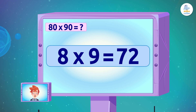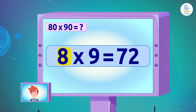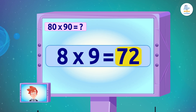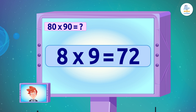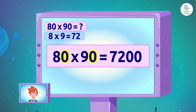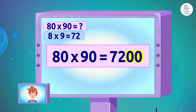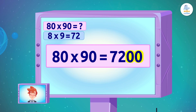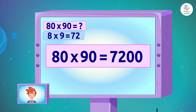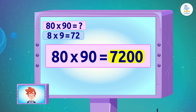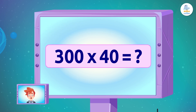Let's follow the trick we just learned. We will start by multiplying the non-zero numbers, that is 8 times 9, which gives us 72. Then we count the zeros from the numbers we want to multiply and add them to 72, so the final result is 7200.